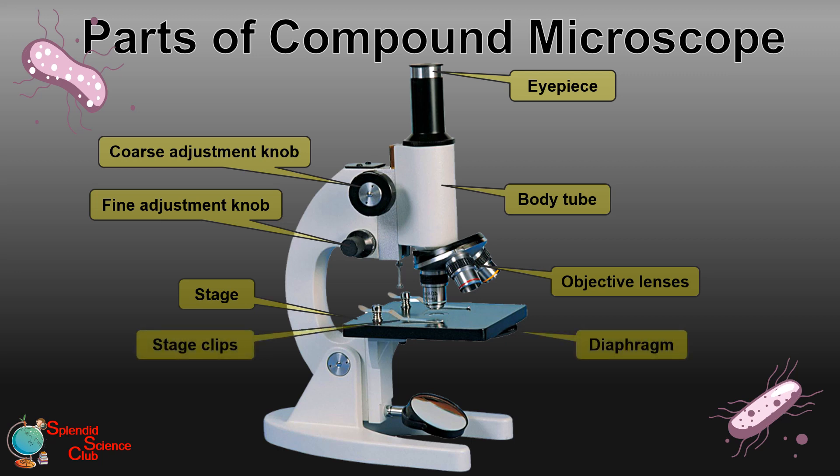The diaphragm is just below the stage and it controls the amount of light reaching the specimen. The mirror can be a convex mirror or a plane mirror — it focuses light onto the diaphragm. The microscope is kept steadily on a supporting surface by the base.